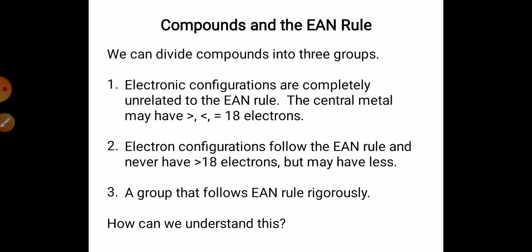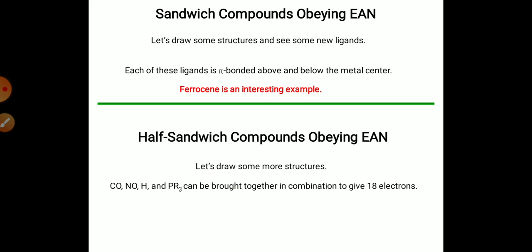The central metal may have more than or less than 18 electrons. The electronic configuration follows the EAN rule and never has less than 18 electrons, but it may have less. Compounds that follow the 18 electron rule are stable, while those which don't follow the EAN rule are mostly unstable.